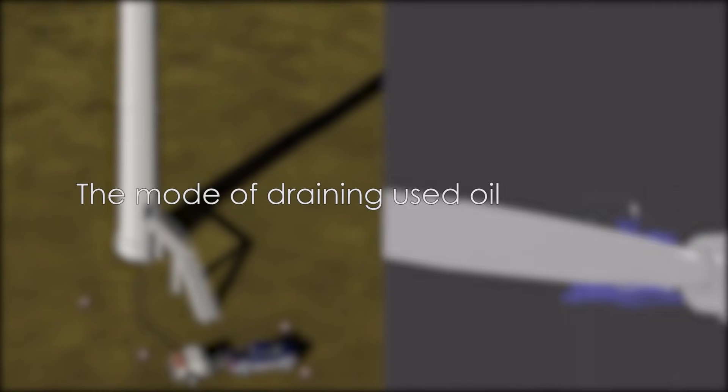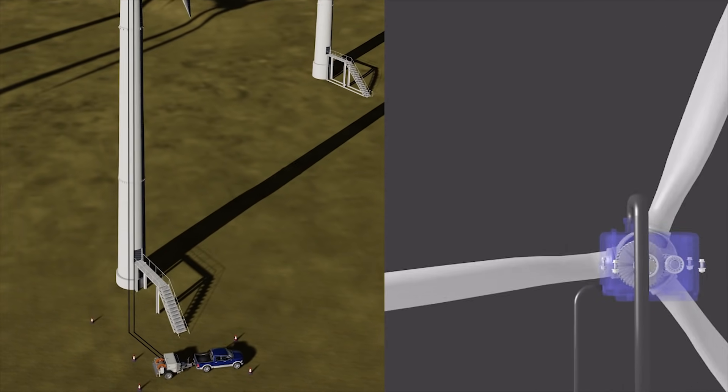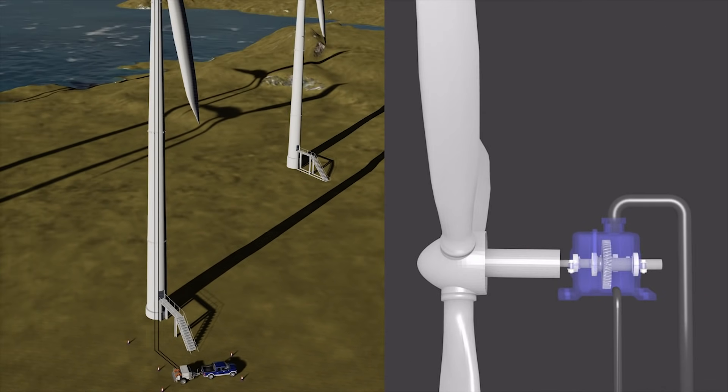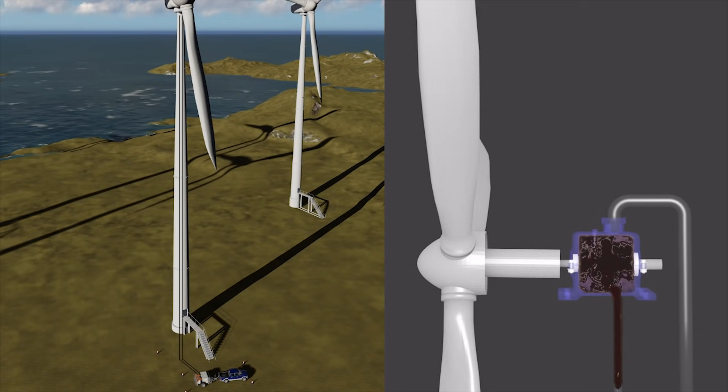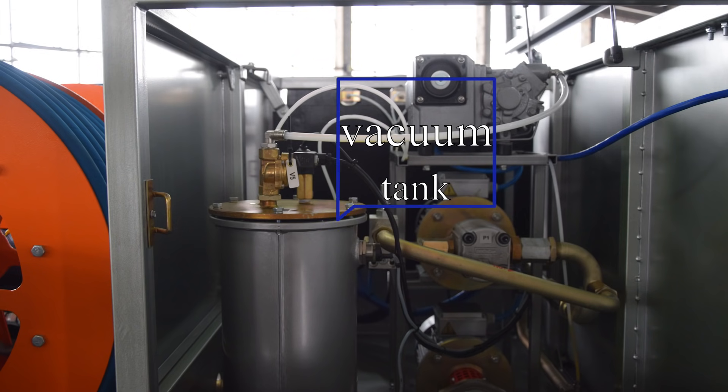The mode of draining used oil: In this mode, the vacuum pump drains the oil from the wind turbine gearbox into a vacuum tank until it's filled, after which the gear pump turns on for further pumping of oil to the prepared container.